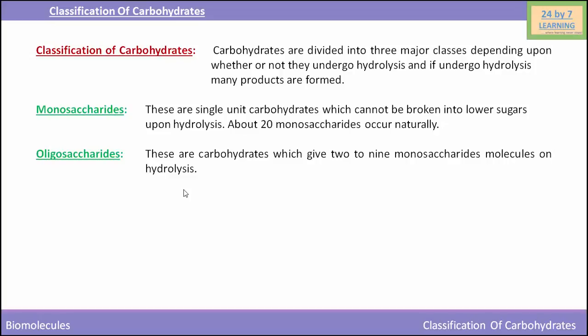Depending on the number of monosaccharide molecules condensed, oligosaccharides are further classified into disaccharides, trisaccharides, tetrasaccharides, and so on. Carbohydrates that on hydrolysis give two molecules of same or different monosaccharides are called disaccharides; examples include sucrose and lactose. Those that give three molecules of monosaccharides are trisaccharides; an example includes raffinose.